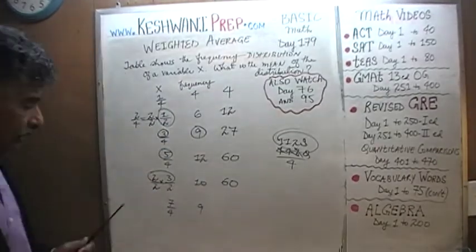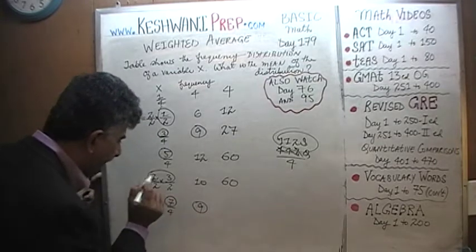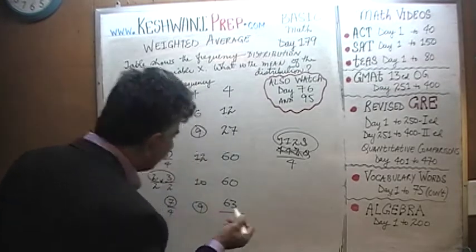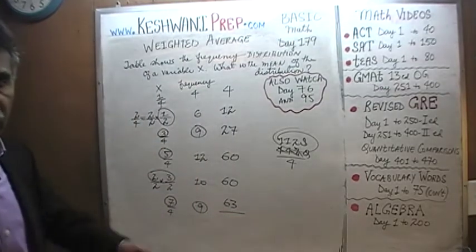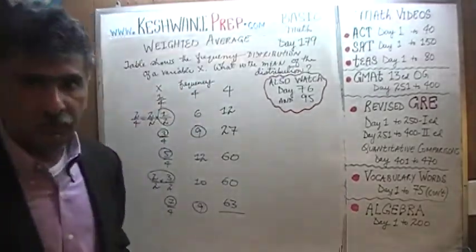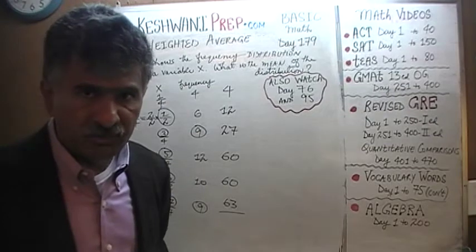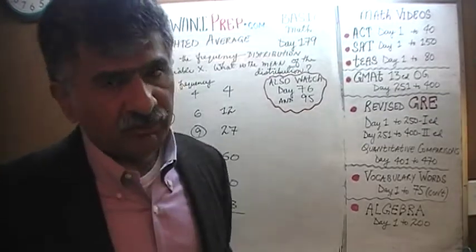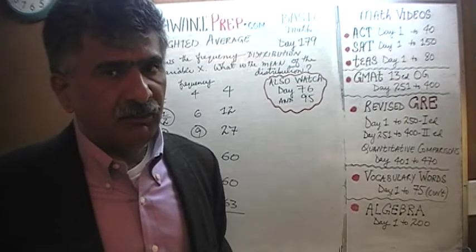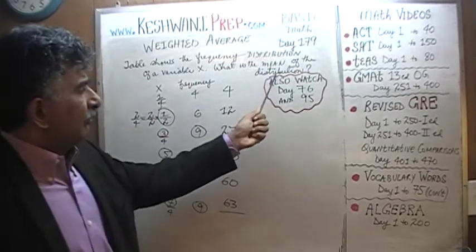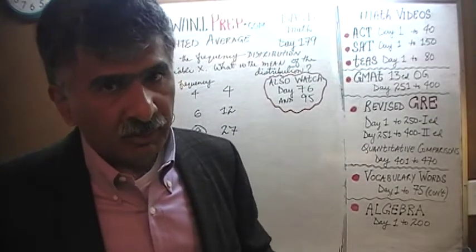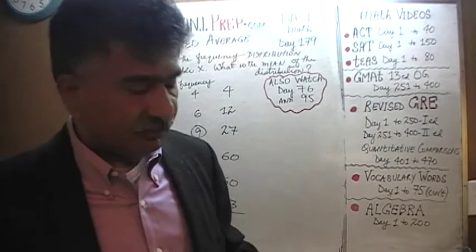Now we're going to count all our quarters, convert them into dollars, then divide by the number of people to get the average amount per person. That's the mean of the frequency distribution — when they ask for the mean, they're asking how much money each person has on average. That's what it is.